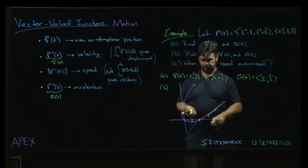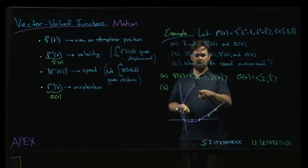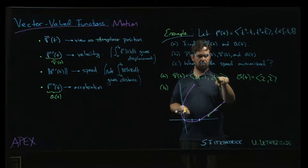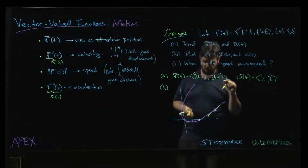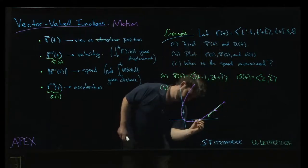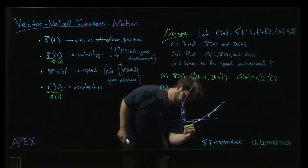If I plug in t is equal to minus 1, that's this point down here. And I'm going to have minus 3. And then I'm going to have, that's going to be minus 2 plus 1. Minus 3 and then minus 1. And so that's going to be like that.